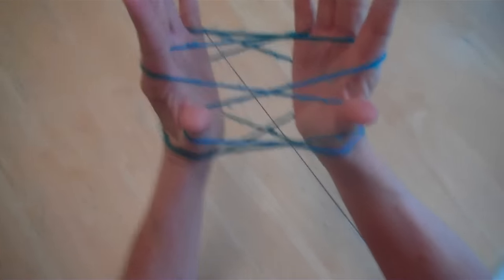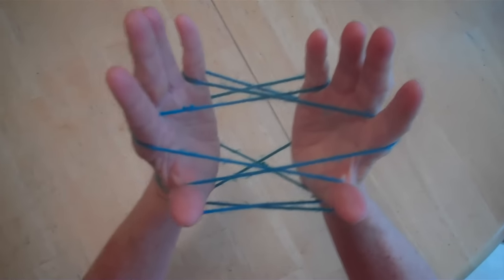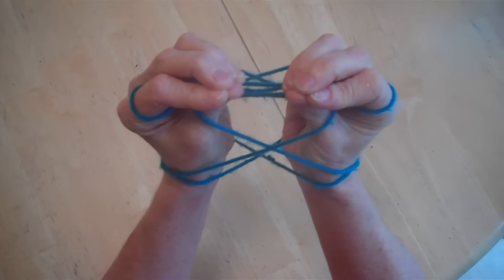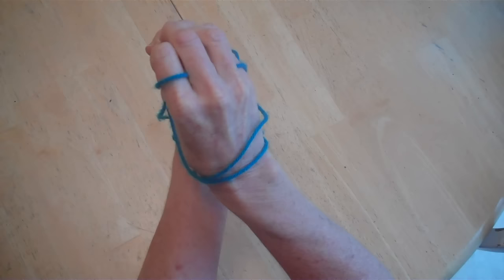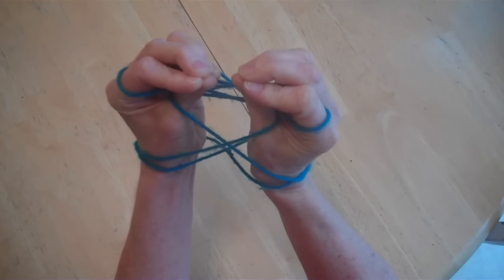Now we're going to make the spider. The spider comes from the drum. What you're going to do is close all of your fingers and hold them very tight. You're going to slide both of the strings that are on the back of your wrist over your hands.